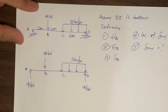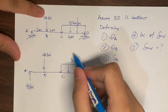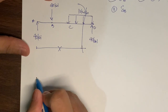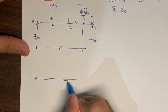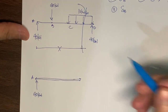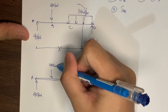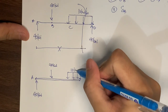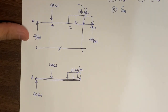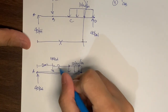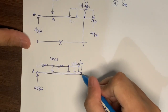We cut at segment CD and let this distance be x. Let's draw the free body diagram of that cut section. We have the reaction at point A of 40 kilonewtons, and the uniform load of 10 kilonewtons per meter acting over the portion starting at point C. Don't forget to write the distances since we'll be creating the moment equations.